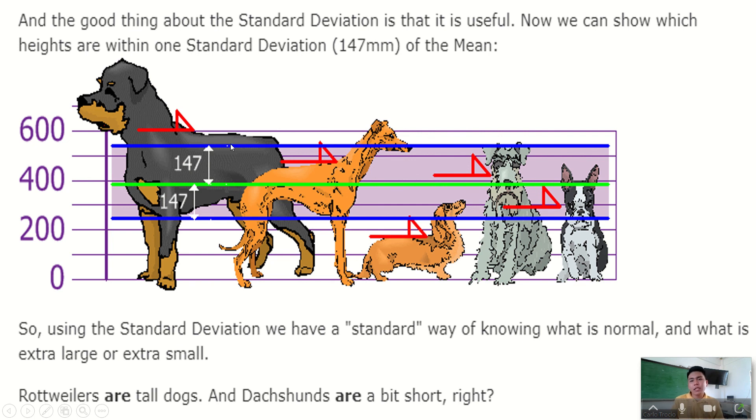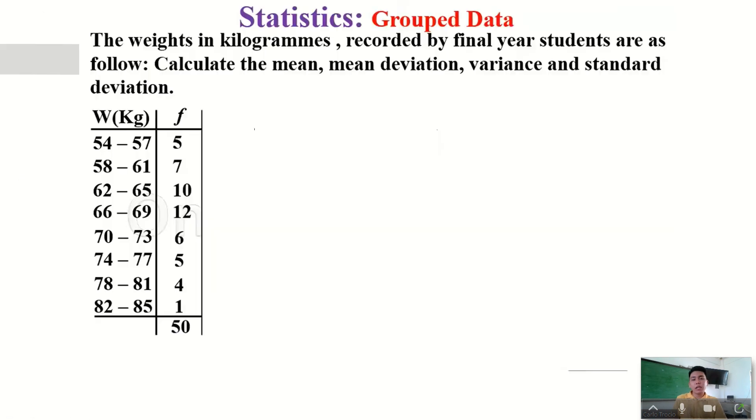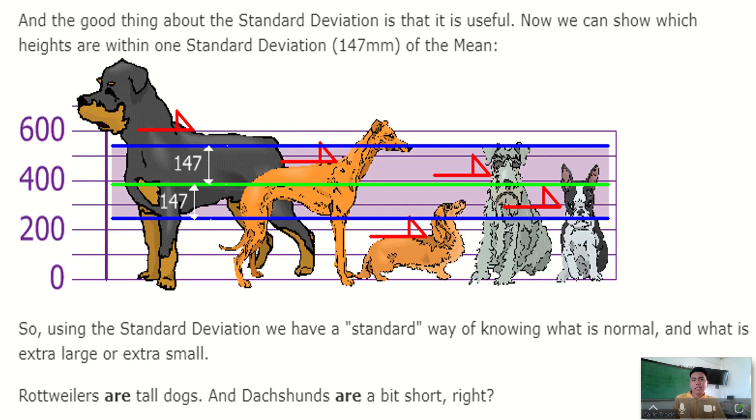This will be the standardized distances, equal distances of each data. That is what we call the standard deviation. So that ends our discussion about standard deviation.